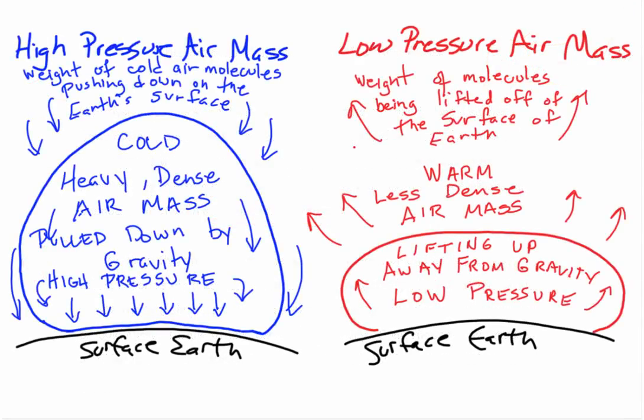If we take this a step further and think about this in relation to air pressure, warmer air is lighter and rises from the surface of the planet, therefore relieving pressure at the surface — less pressure because the air molecules are lighter and less dense. Air at the poles sinks because it's heavier and denser, creating greater air pressure. So colder air masses have greater pressure, and warmer air masses have less air pressure.